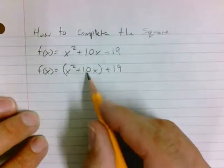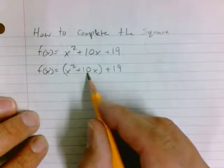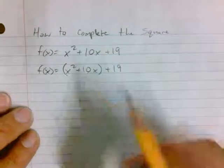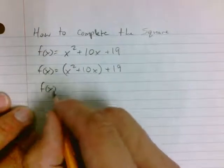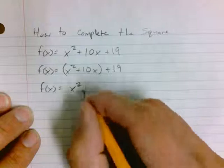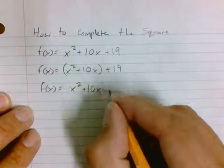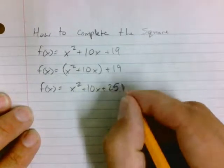The next thing I'm going to do is take this number 10, divide it by 2, and square it. So 10 divided by 2 is 5. 5 squared is 25.